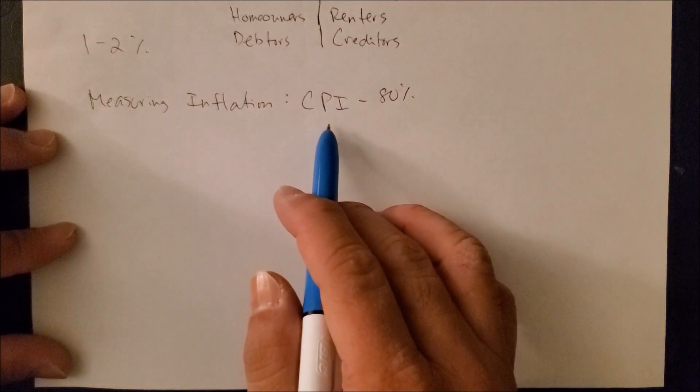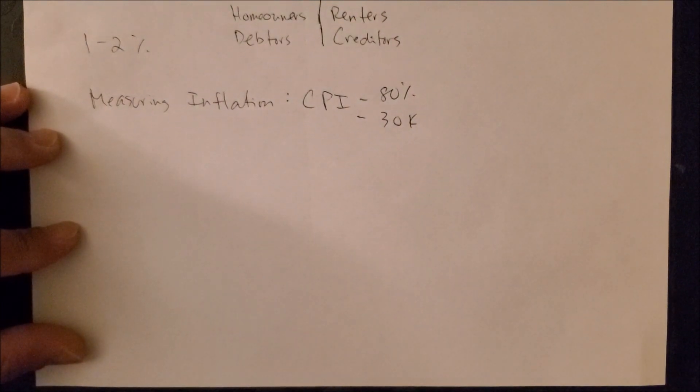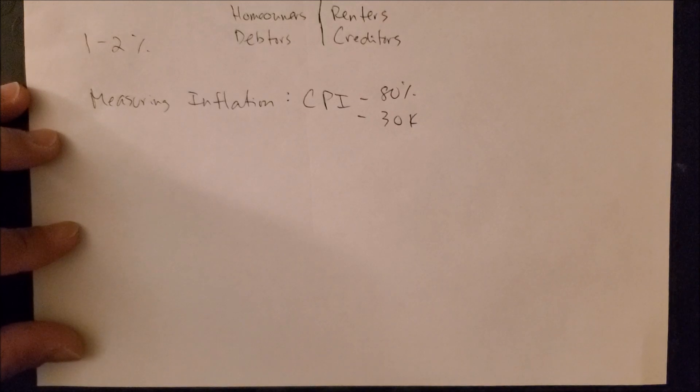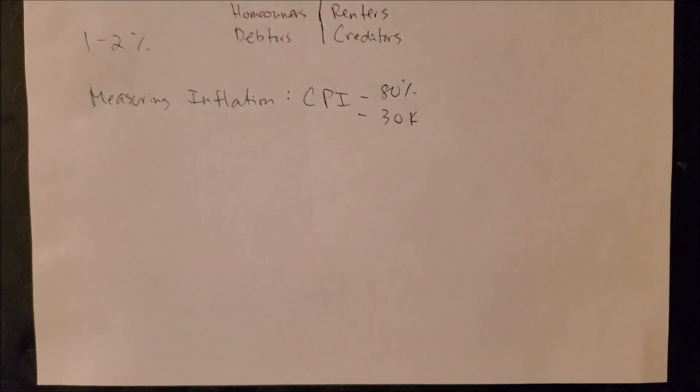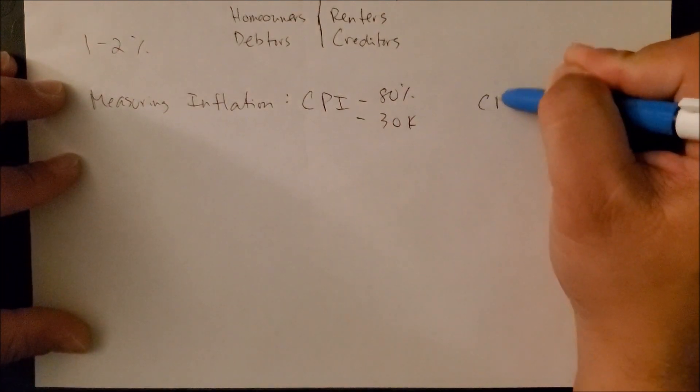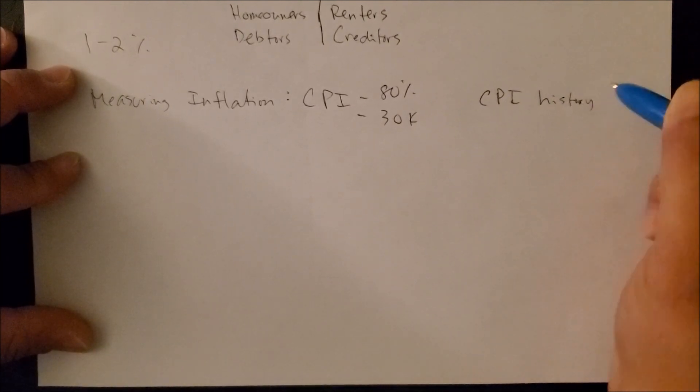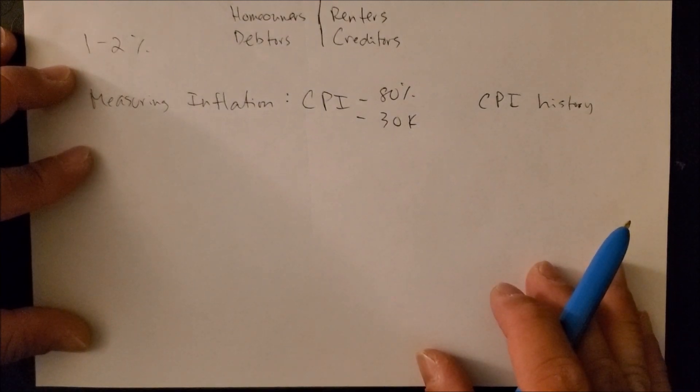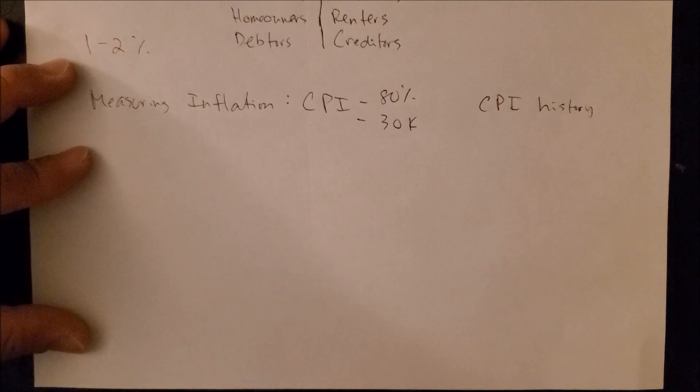The CPI also includes more than 30,000 items, goods, services that you and I as consumers buy on a monthly, yearly basis. So this is a pretty good measurement of inflation based on consumer spending. Now there's a website. If you go on to Google and you type in CPI history, you will see a website called InflationData.com, and this gives you the inflation index, CPI index, from 1913 all the way to 2020.